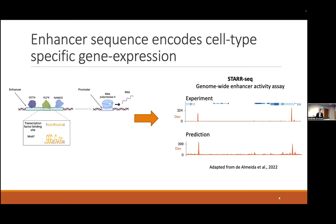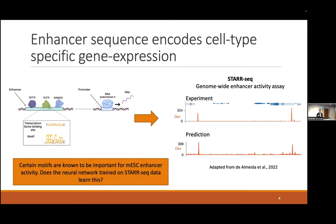Today I'm going to focus on motifs — transcription factor binding sites — which really serve as the building blocks for enhancers. We know quite well which specific motifs are important for mouse embryonic stem cell enhancers, and we wanted to see whether the neural network was picking up these motifs.